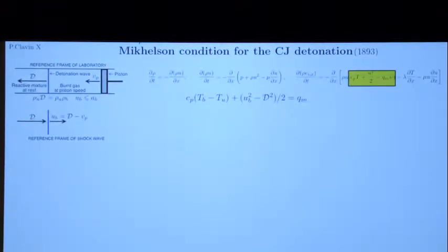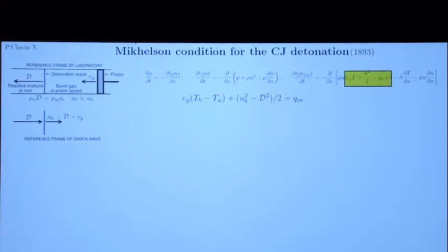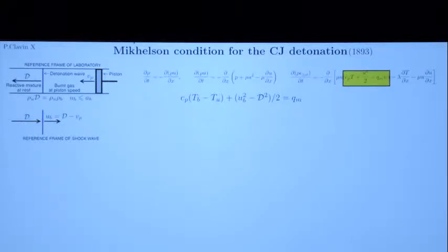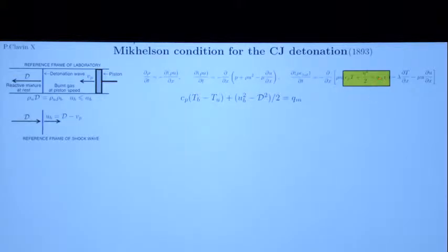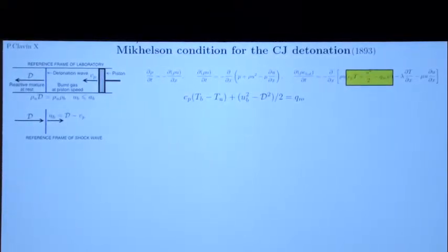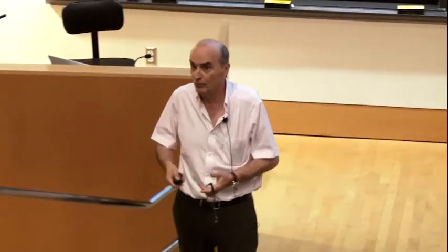Now let me go to detonation. The difference when you have a detonation is that you have another energy to account for — the chemical energy. You do not conserve only the mechanical and thermal energy; you should also conserve the chemical energy. So you must add the chemical energy inside the conservation of total energy. This is the difference compared to a pure shock wave.